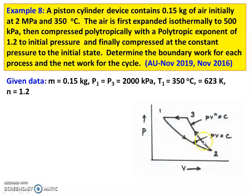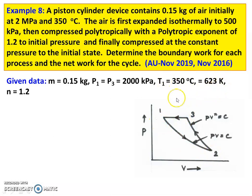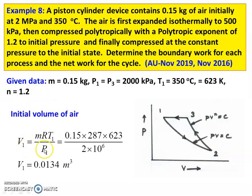Second process: polytropic compression, PV to the N equal to constant. Third process: constant pressure compression. Given: mass equal to 0.15 kg, P1 equal to P3 equal to 2000 kPa, T1 equal to 350°C which is 623 K, T1 equal to T2 (isothermal), N equal to 1.2. Initial volume V1: using P1V1 equal to mRT1, V1 equal to mRT1 by P1 equal to 0.15 into 287 into 623 divided by 2 into 10⁶, giving V1 equal to 0.0134 m³.